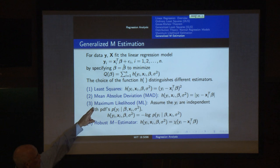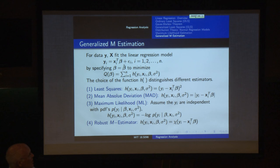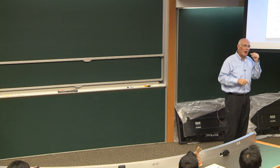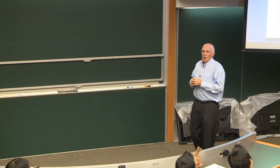Rather than taking the square of the fitted residual, we could take simply the modulus of that — the mean absolute deviation. So rather than summing squared deviations, we sum absolute deviations from the mean. To solve for those estimates, we'd apply the principles of convex optimization, taking derivatives and setting them equal to zero.